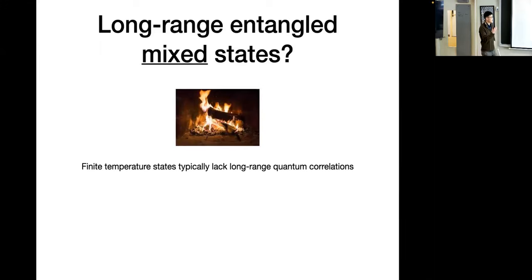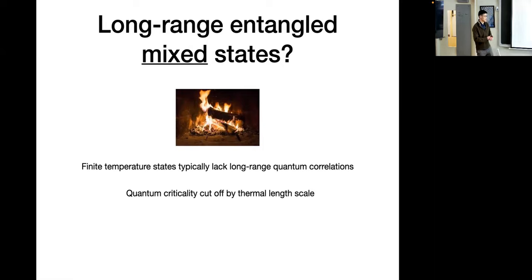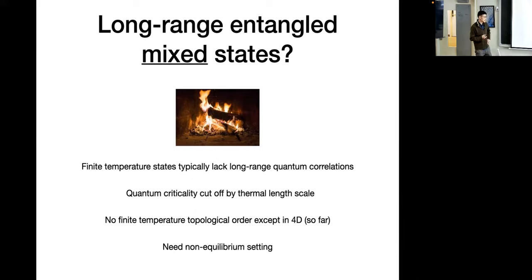At first glance, this might seem quite difficult. The mixed states that we're most familiar with are thermal states — equilibrium Gibbs states of local Hamiltonians — and these typically do not have long-range quantum correlations. Usually finite temperature is just bad news for any non-trivial quantumness. If you start off with a quantum critical system and you turn on finite temperature, then these long-range correlations are now cut off by a thermal length scale. Similarly, for topological order, if you turn on finite temperature, then unless you're in four dimensions, there is no finite-temperature topological order.